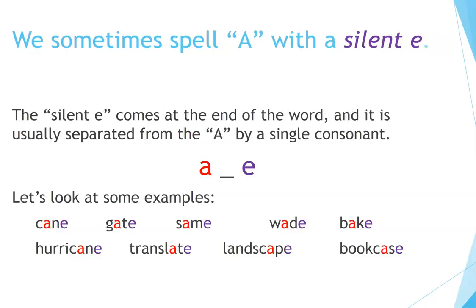We sometimes spell A with a silent E. The silent E comes at the end of the word and it is usually separated from the A by a single consonant. Let's look at some examples. Cane. Gate. Same. Weighed. Bake. Hurricane. Translate. Landscape. Bookcase.